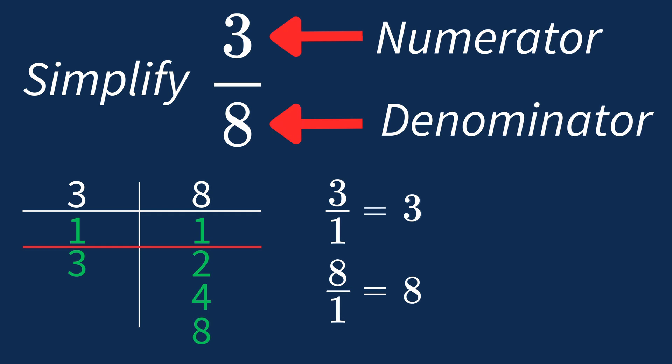After dividing both the numerator and denominator by their greatest common factor of 1, we ended up with the same fraction, 3 over 8.